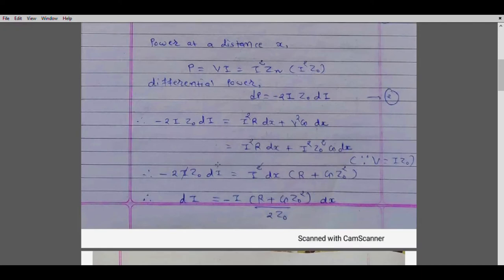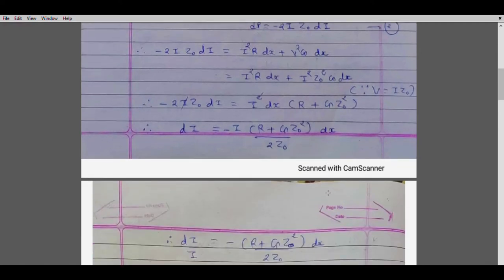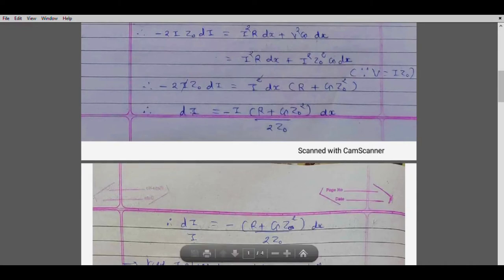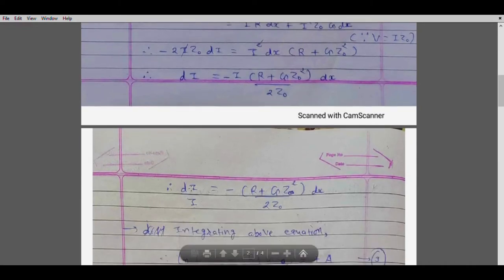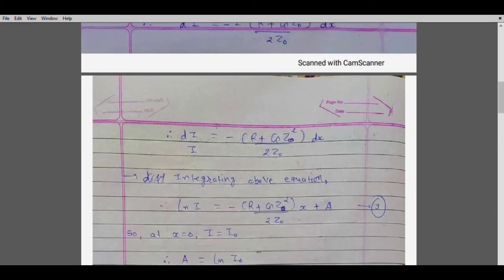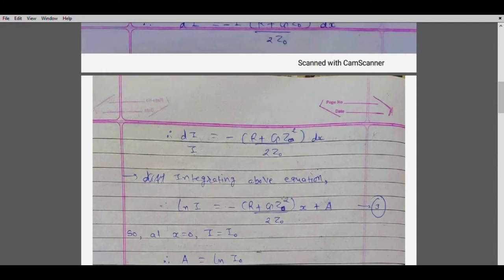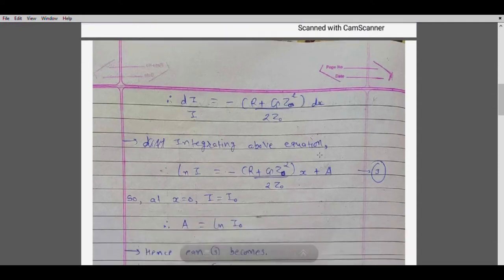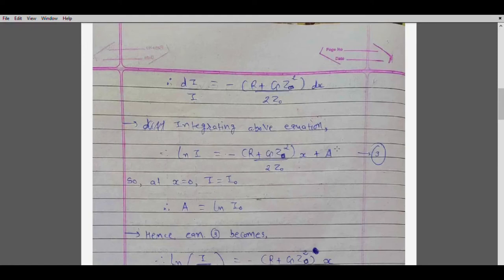After canceling I squared from both sides, we can write dI equals minus I times the quantity R plus G·Z0 squared, divided by 2·Z0, multiplied by dx. Rearranging, we get dI over I equals that constant term times dx. Taking the integration of this equation, dI over I becomes the natural logarithm of I, and the integration of dx gives x, plus a constant A.